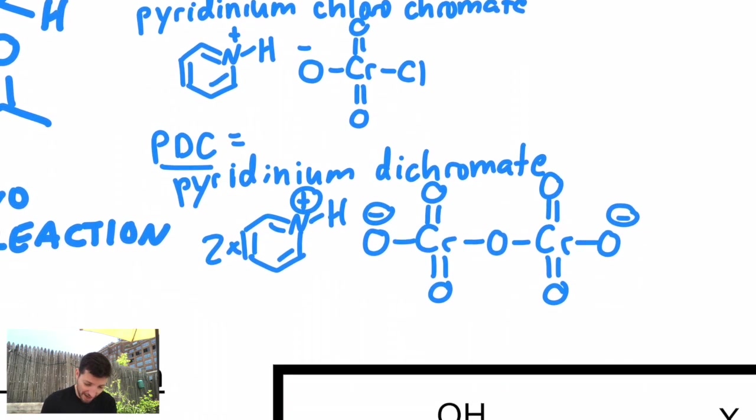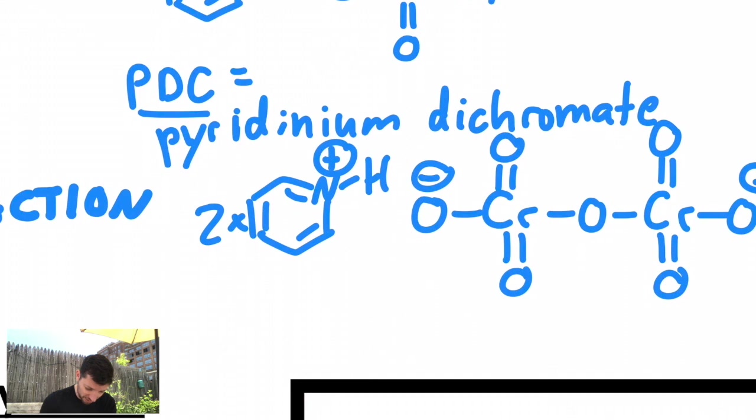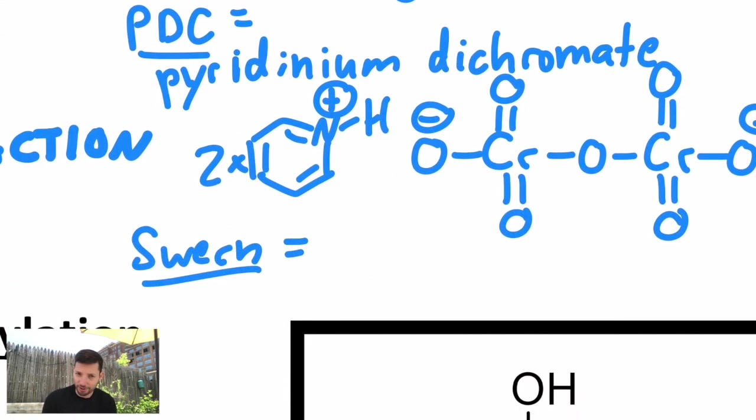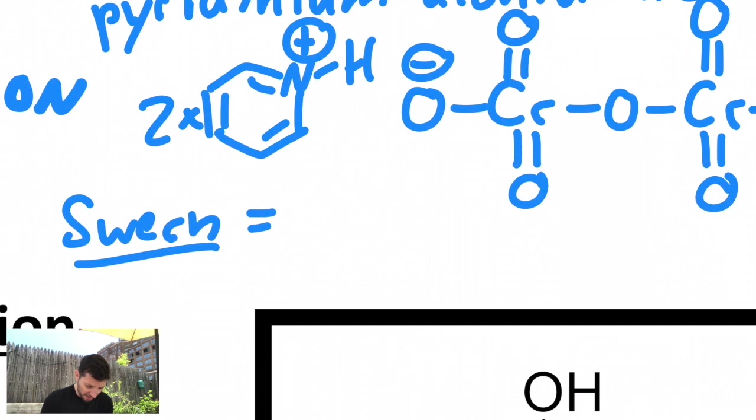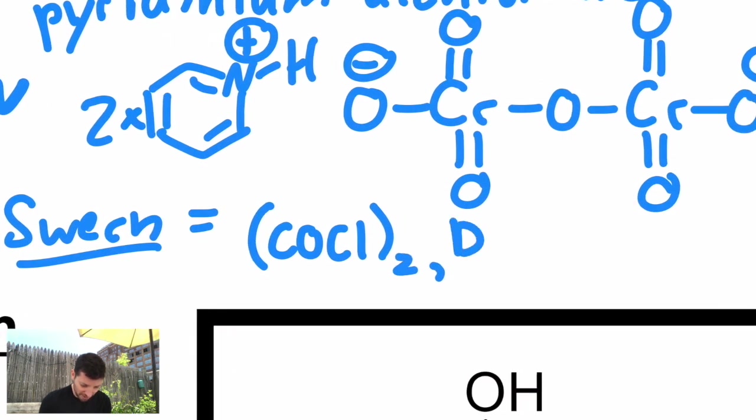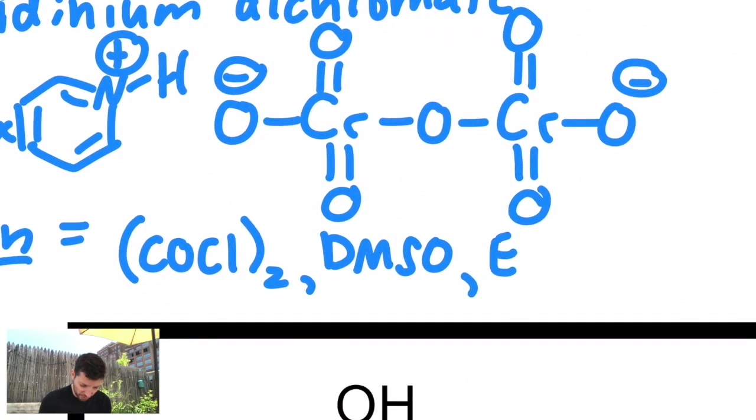There's one other. It's named after a chemist. It's a named reaction. It's called the Swern oxidation. It's actually very useful because it doesn't use all these toxic heavy metal chromium-based compounds. It's a series of three reagents. It is oxalyl chloride, COCl2, in the presence of dimethyl sulfoxide, DMSO, and then a base, usually an amine base like triethylamine. So if you see that combination, that's a recipe for the Swern oxidation.